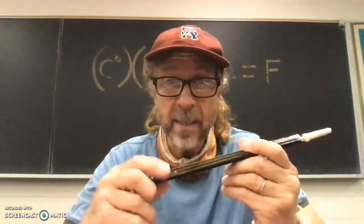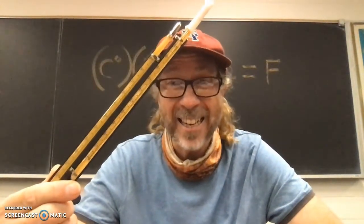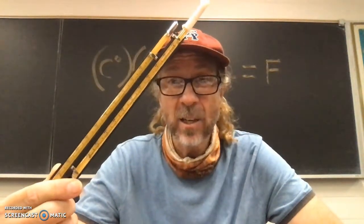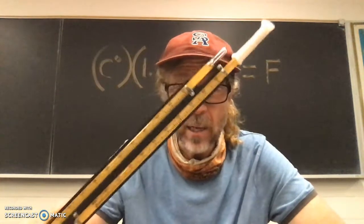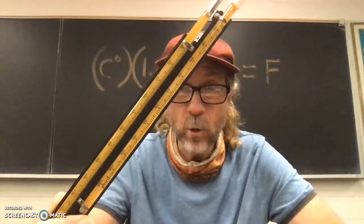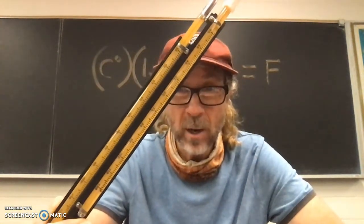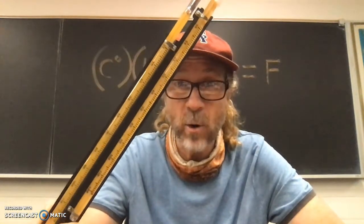The easiest and probably best way to take relative humidity is to use one of these things. This thing is called a sling psychrometer. And if you look at it, you can tell that there are two thermometers on the sling psychrometer.